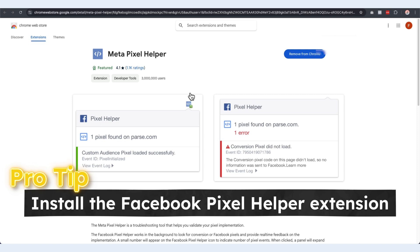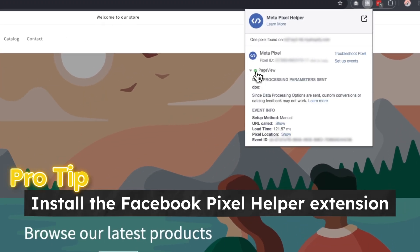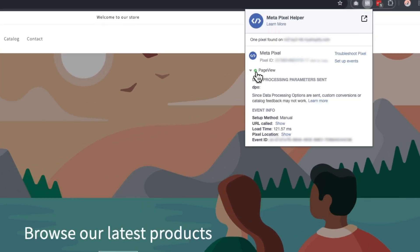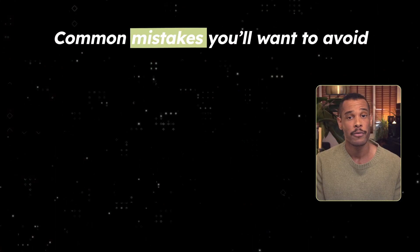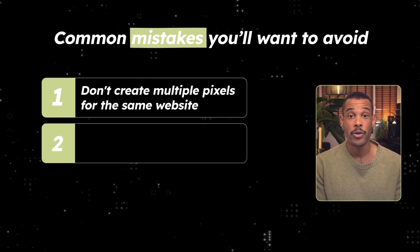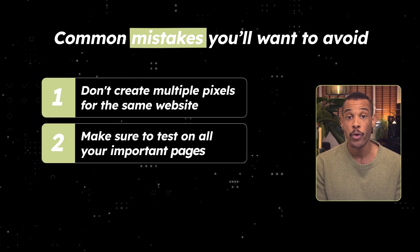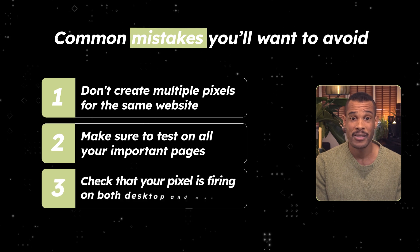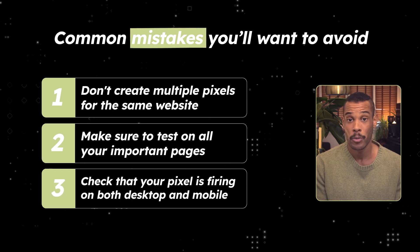Here's a pro tip to avoid headaches: install the Facebook Pixel Helper extension for Chrome — it'll light up green when everything's working perfectly. Now here are some common mistakes you'll want to avoid: don't create multiple pixels for the same website, make sure to test on all your important pages, and check that your pixel is firing on both desktop and mobile. This is crucial.